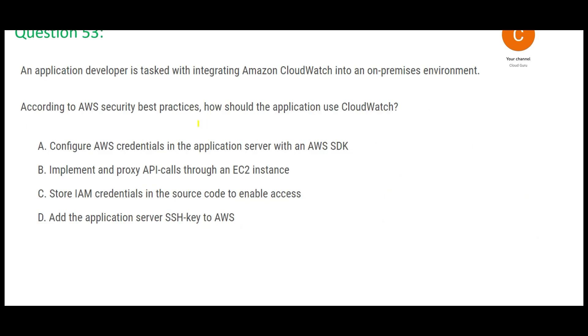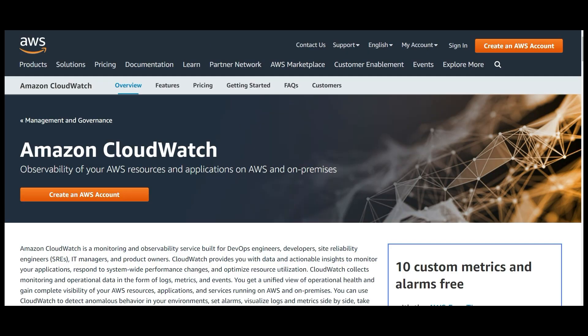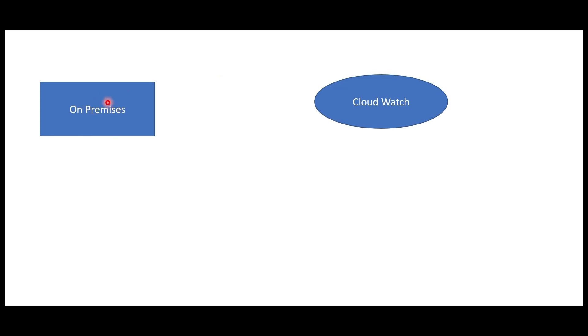Let us look at the next question. You have your infrastructure on-premises and you want to use CloudWatch. Remember, CloudWatch is an AWS service but it works with AWS as well as on-premises. It observes AWS resources and applications on AWS and on-premises. The question is how should the on-premises application use CloudWatch?